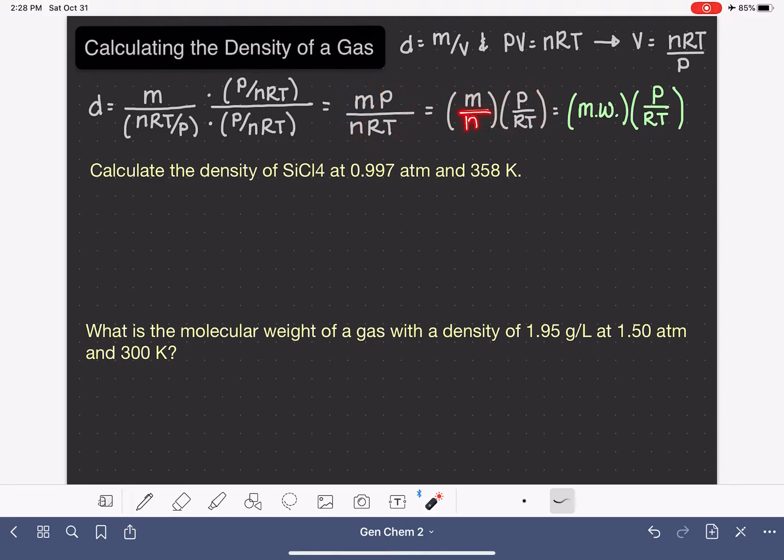m over n is grams, because it's mass, over moles, because it's n. Grams per mole is what we know as the molecular weight or the molar mass.